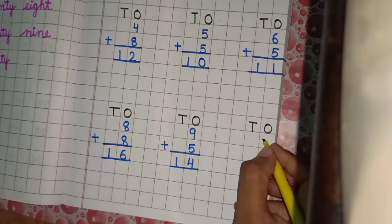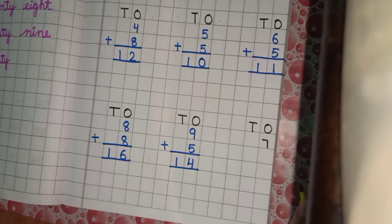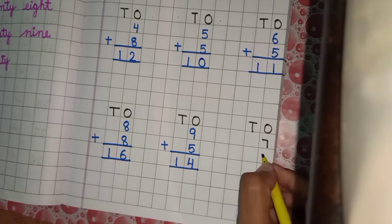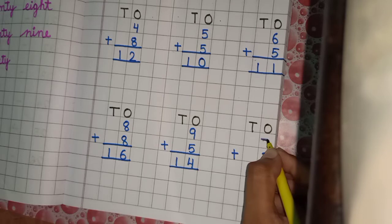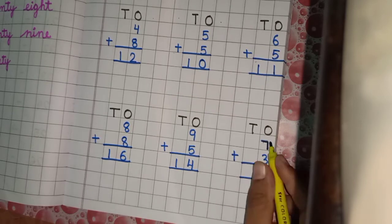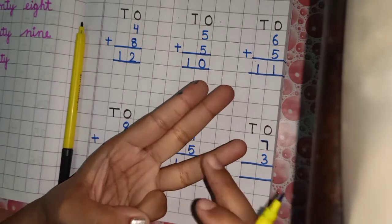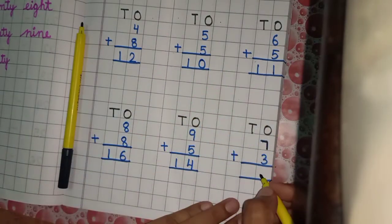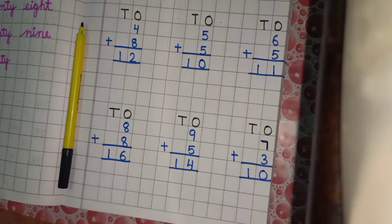Now write seven and three, put sign of addition. Seven and three: raise three fingers — eight, nine, ten. Write zero here and one here. Okay students, practice this carefully.